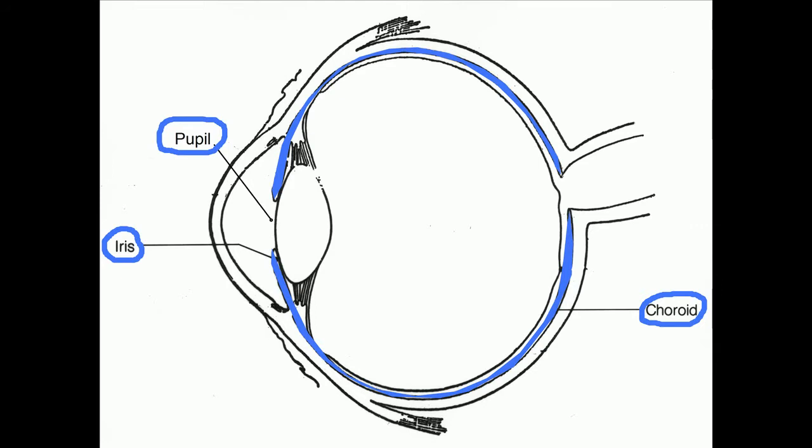Under the sclera, we find the choroid. It is a thin membrane with many blood vessels. It forms the iris at the front of the eye.